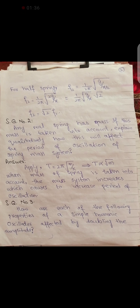Question number 2: Any real spring has a mass M. If this mass is taken into account, explain qualitatively how this will affect the period of oscillation. T is equal to 2π under root M over K, so T is directly proportional to mass. When mass of the spring is taken into account, the mass will increase, therefore time period of oscillation increases.